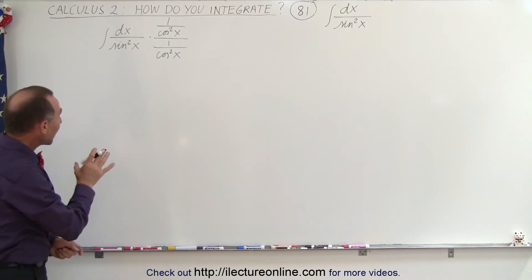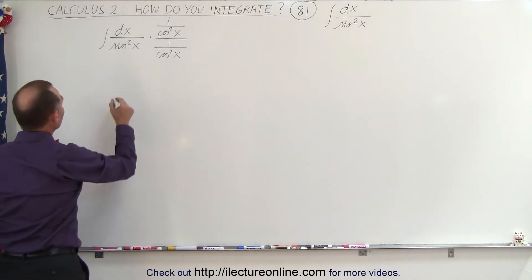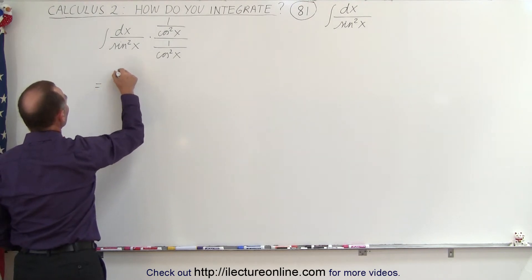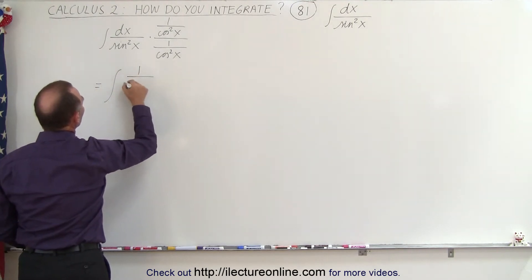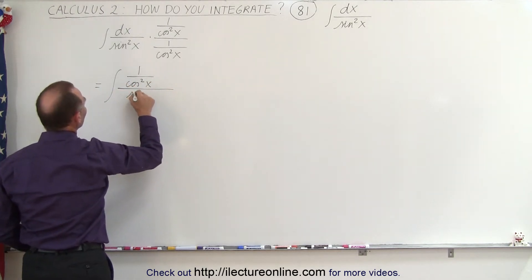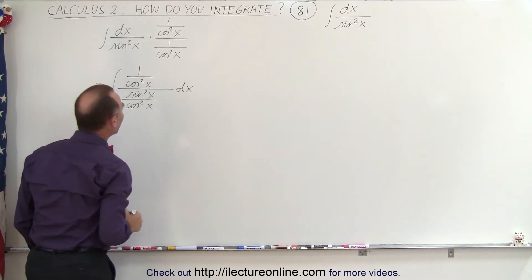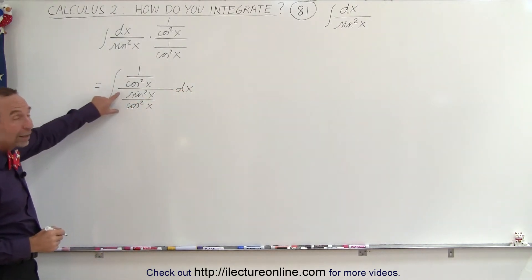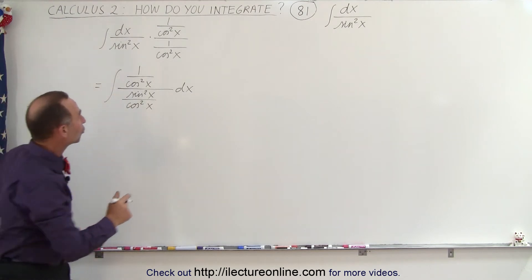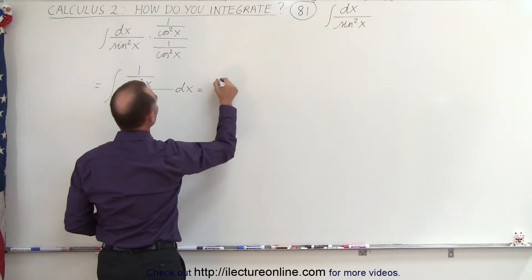But it turns out when you do that it becomes a lot easier to integrate because then this integral becomes equal to 1 over the cosine squared of x in the numerator divided by the sine squared of x divided by the cosine squared of x times dx in the denominator. And then you can write the denominator as the tangent squared of x.